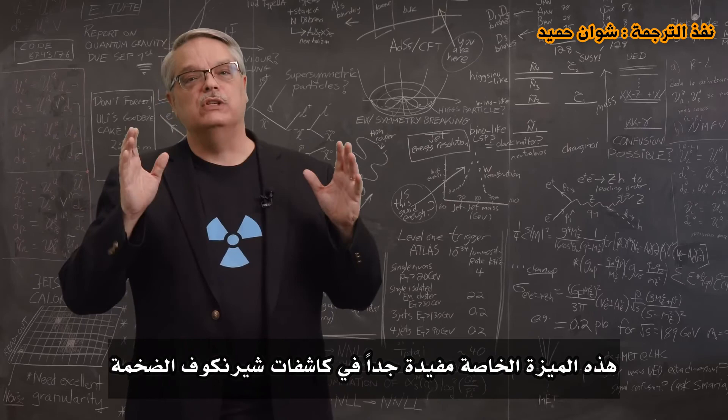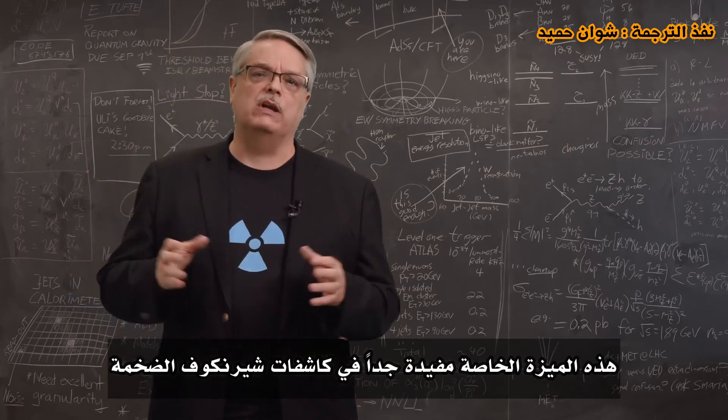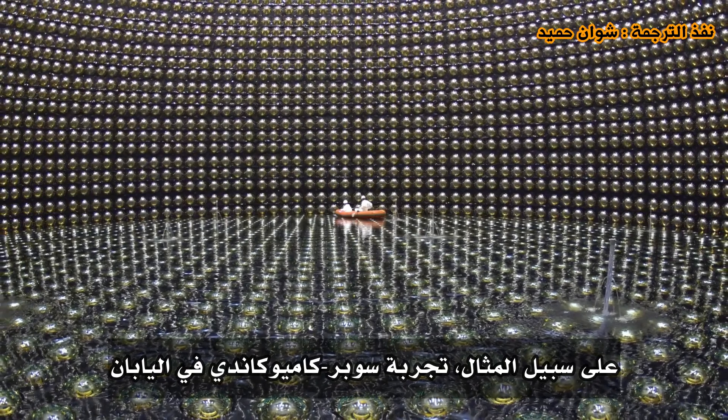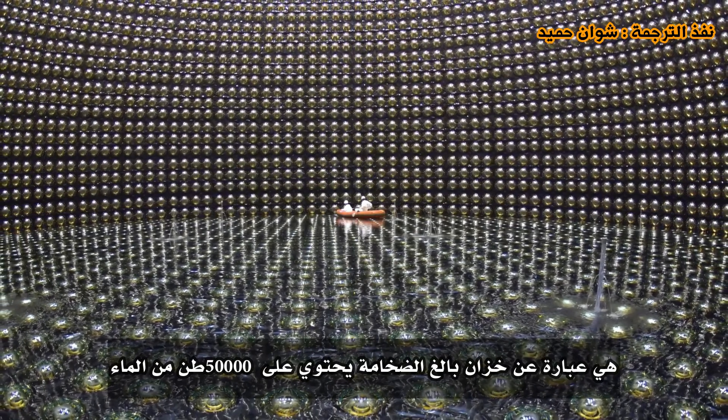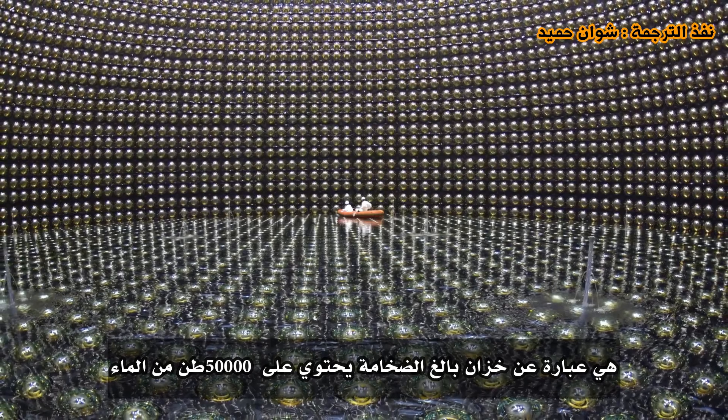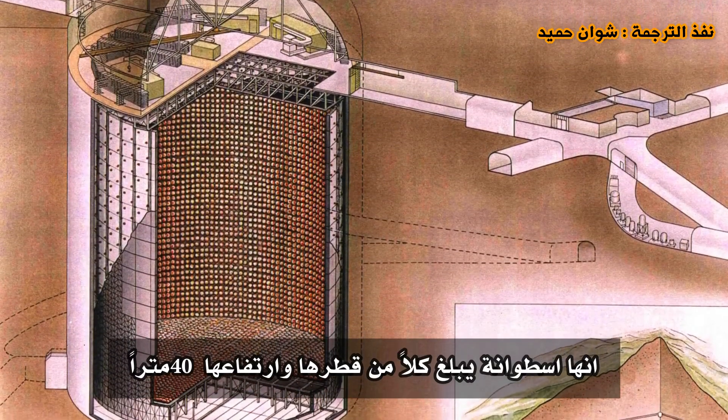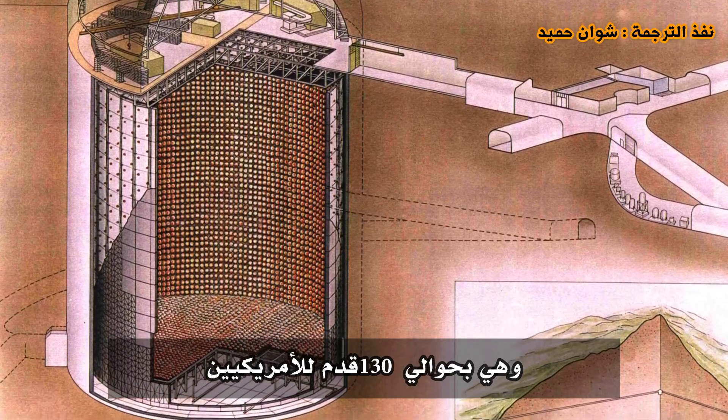This particular feature is very useful in huge Cherenkov detectors. For instance, the Super-Kamiokande experiment in Japan is an enormous tank holding 50,000 tons of water. It's a cylinder about 40 meters, both in diameter and height. That's about 130 feet for Americans.